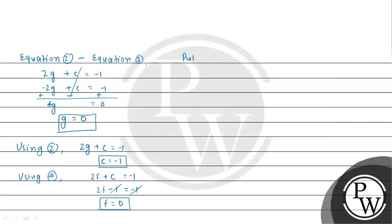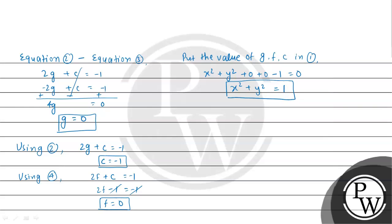Now we substitute the values g = 0, f = 0, and c = -1 into equation 1, the general form. This gives x² + y² + 0 + 0 - 1 = 0, which simplifies to x² + y² = 1. We can compare this with the standard form x² + y² = r².